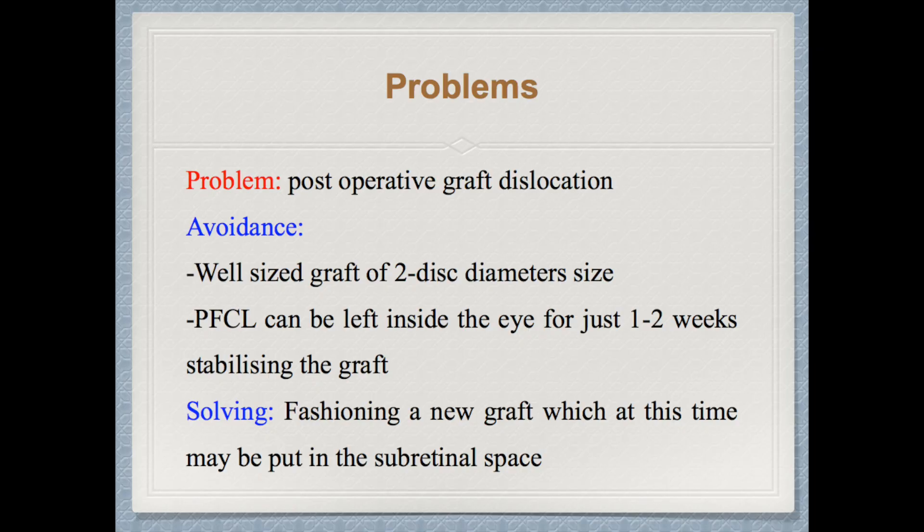The main problem of this technique is post-operative graft dislocation. To decrease the incidence of this problem, make the graft approximately 2 disc diameters in size. Also, peripheral PFCL can be left inside the eye for 1-2 weeks to help stabilize the graft. If dislocation has already occurred, fashion a new graft which can be placed in the subretinal space, which decreases the incidence of flap dislocation and loss.